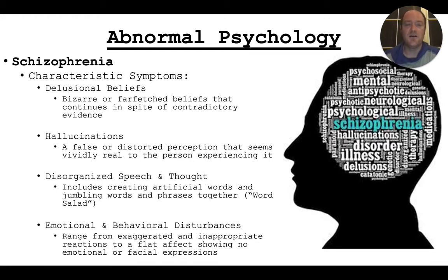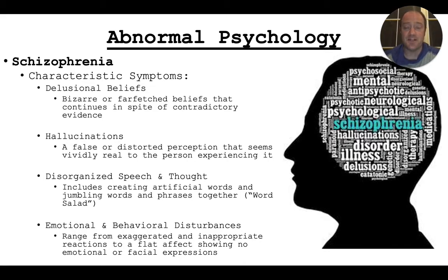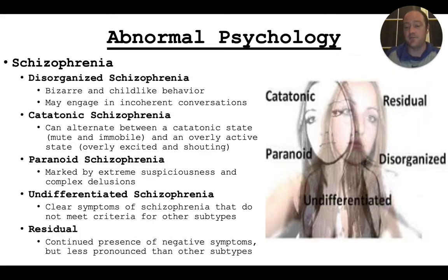Hallucinations are usually distorted perceptions — these can be visual, but usually they're auditory. People who are schizophrenic usually hear voices. Disorganized thought and speech means that when they talk, it doesn't make sense to us, but it makes perfect sense to them. And then there are emotional and behavioral disturbances — so obviously, inappropriate reactions, or even violent or completely emotionless reactions, can be examples.